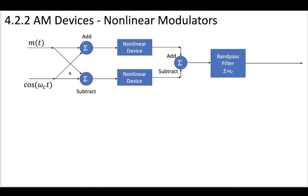Then we will pass these two signals through nonlinear devices. Once we've passed those two signals through the nonlinear devices, we will add in the top one and subtract the bottom one, put them through a bandpass filter. And what we're going to see is that we should have at the very end our message being multiplied by our cosine with our carrier frequency.